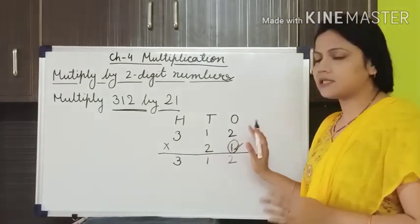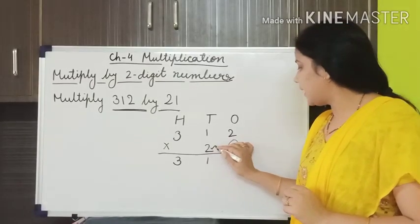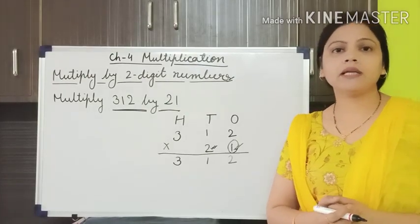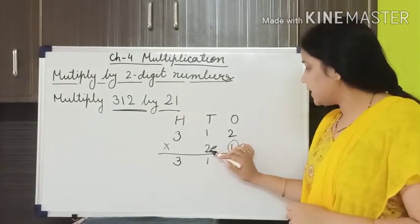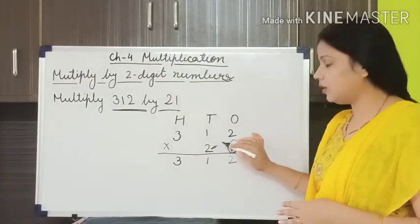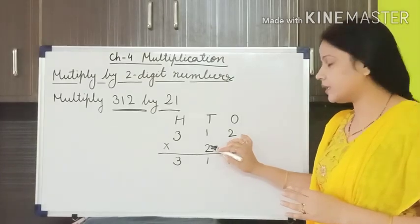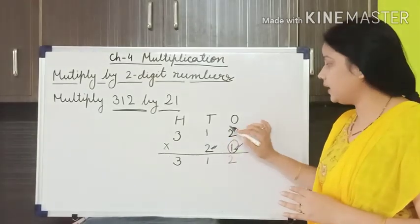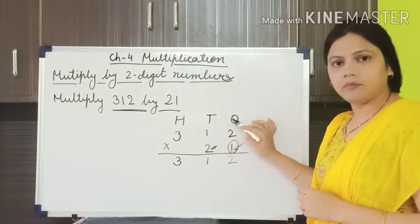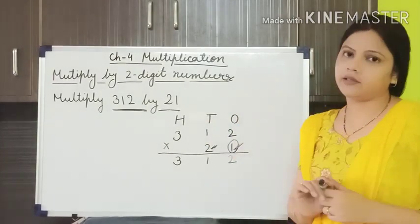We have multiplied by the first number. Now we have to multiply by the second number. How will we multiply? Just like we already did with this number, similarly we have to start our multiplication from the 1s place — this number will first be multiplied by the 1s place, then the 10s place, and after that the 100s place.